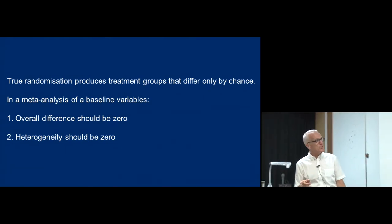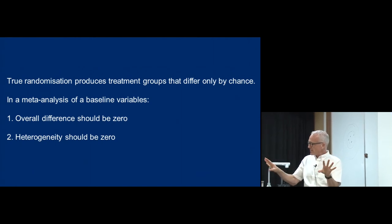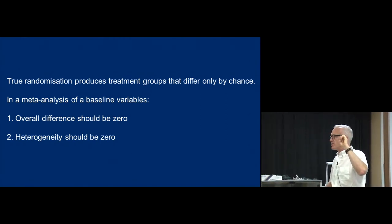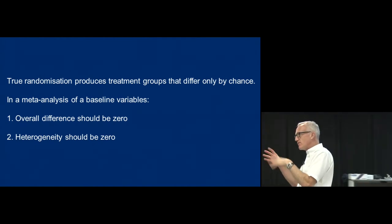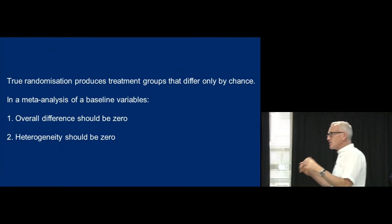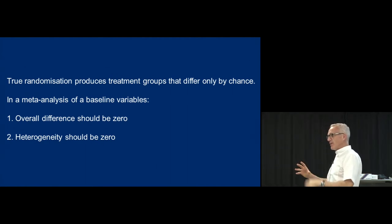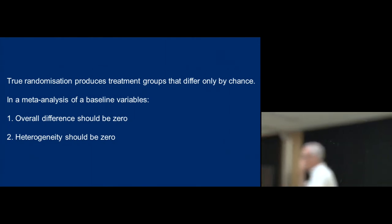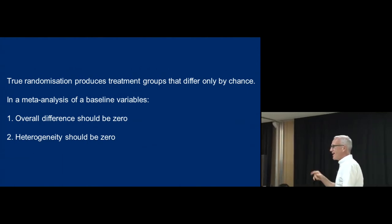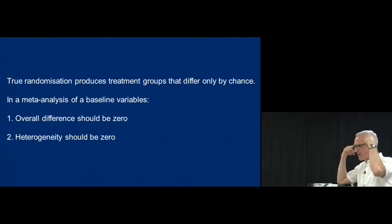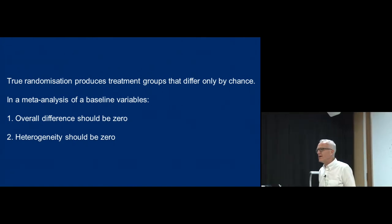If you do proper randomization you'll get two groups that differ only by chance. Someone did a meta-analysis of studies and found that what really happened wasn't mentioned in the paper. They wrote that they did a randomized controlled trial, but they hadn't really randomized. They were either confused, or it was intentional.